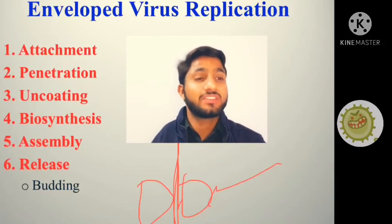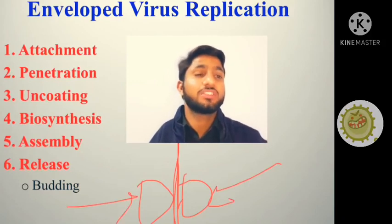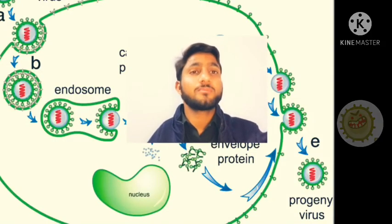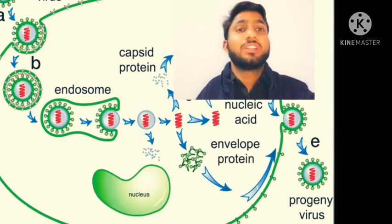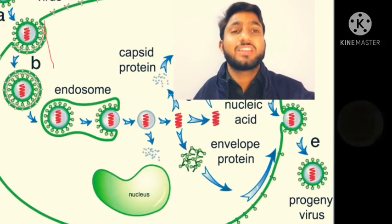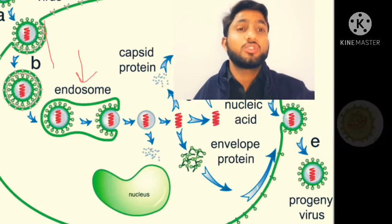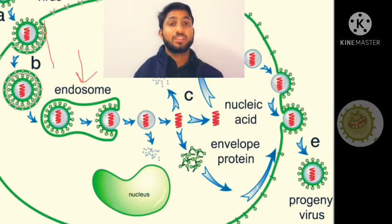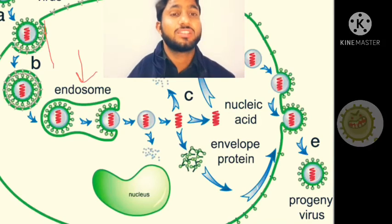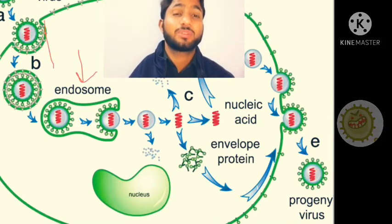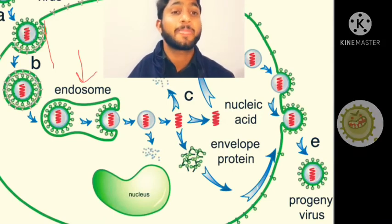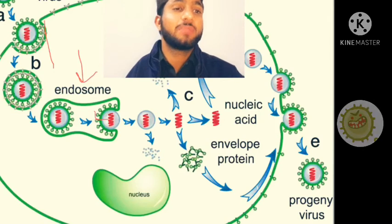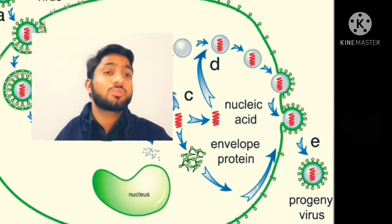Enveloped viruses get inside the cell and are enclosed in endosomes — the cell membrane converts to form endosomes. The viral DNA is then released from these endosomes and begins to replicate inside the host cell.